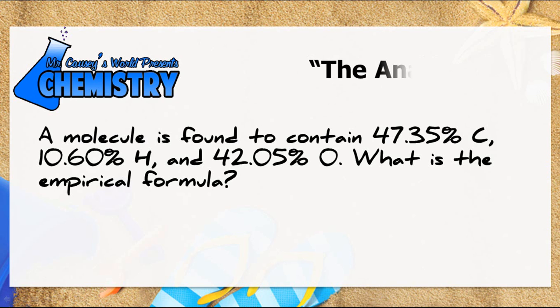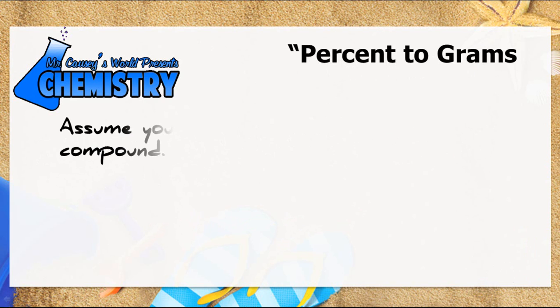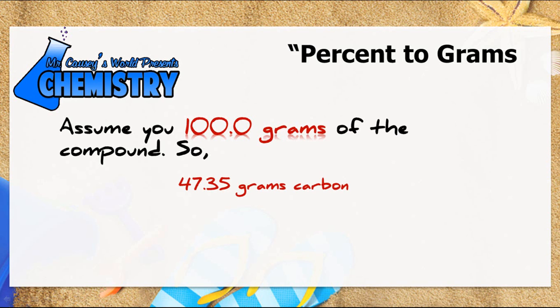So let's analyze it and we realize that we need to change first the percent to grams. We then need to change the grams to moles and the moles to ratios, and then we can find the empirical formula from there. Let's change the percent to grams. Assume you have 100 grams of the compound, so then 47.35 grams of carbon. That'll give you 10.60 grams of hydrogen and 42.05 grams of oxygen.